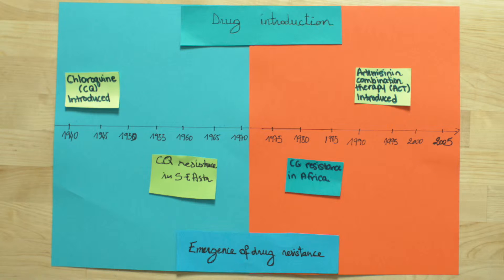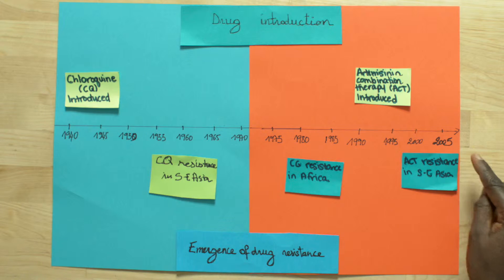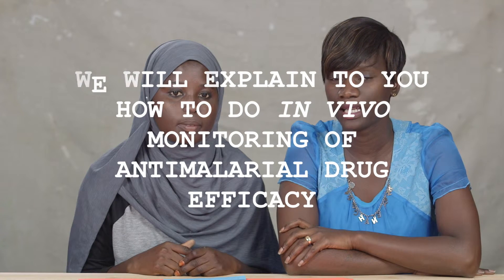But resistance to artemisinin and ACT-derivatives emerged in Southeast Asia in 2005. What can we do to never let it happen again? To answer this question, the best way is monitoring the efficacy of ACT to detect early the emergence of resistance and to make decisions about malaria treatment policy. The only method that can help is in vivo monitoring. This test involves clinical and parasitological monitoring of patients over 42 days.